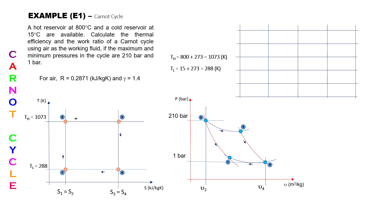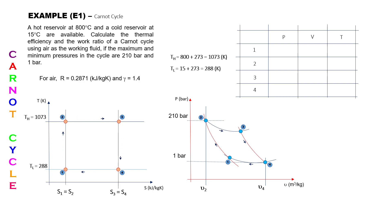I use a tabular method where all the values from the question are entered. The table has pressure, volume, and temperature as horizontal columns, and state points 1, 2, 3, and 4 as the vertical rows. The question has given us the maximum pressure of 210 bar, the minimum pressure of 1 bar, the highest temperature, and the lowest temperature.